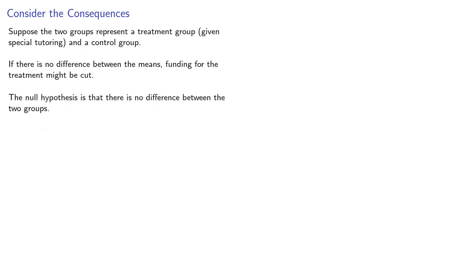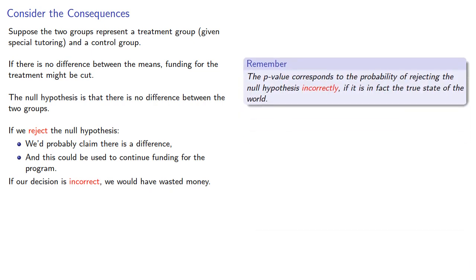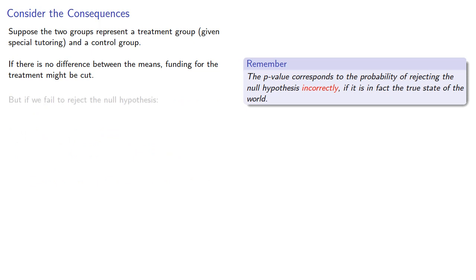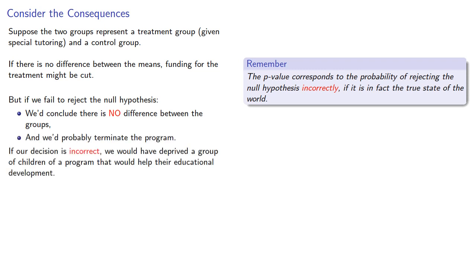If we reject the null hypothesis, we'd probably claim there is a difference, and this could be used to continue funding for the program. If our decision is incorrect, we would have wasted money — and that's where the p-value comes in. The p-value corresponds to the probability of rejecting the null hypothesis incorrectly if it is in fact the true state of the world. On the other hand, if we fail to reject the null hypothesis, we'd conclude there is no difference between the groups and would probably terminate the program. If that decision is incorrect, we would have deprived a group of children of a program that would help their educational development.